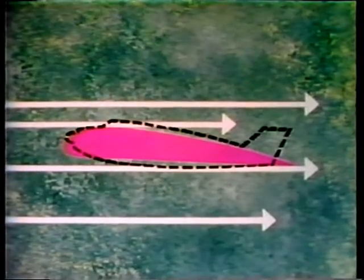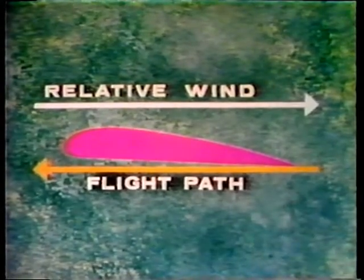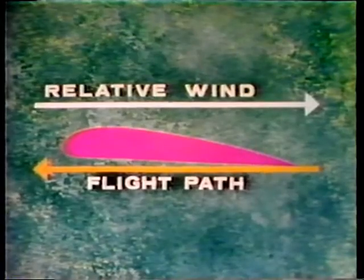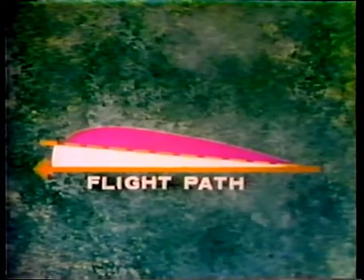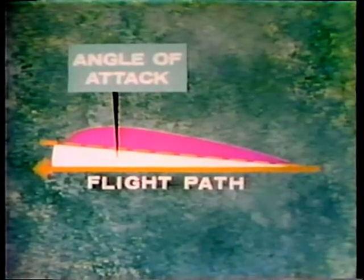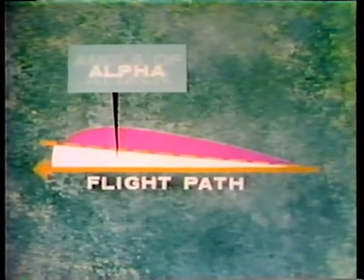The airflow striking the fixed wing airfoil of an aircraft, or the aircraft itself, is called the relative wind. The direction of the relative wind is always opposite to and parallel with the flight path of the airplane. In level flight, therefore, the relative wind and the flight path are horizontal and parallel. The center line or chord line of the airfoil, however, even in level flight, forms a small angle with the flight path. We call this angle the angle of attack. We have given it the symbol alpha.